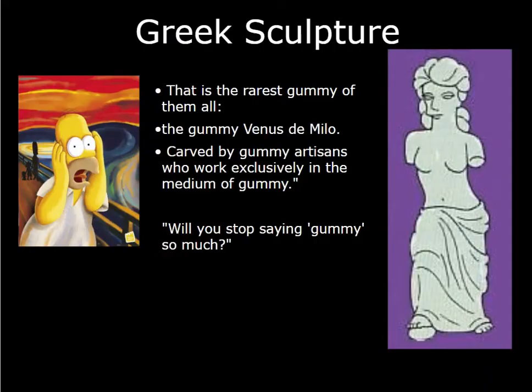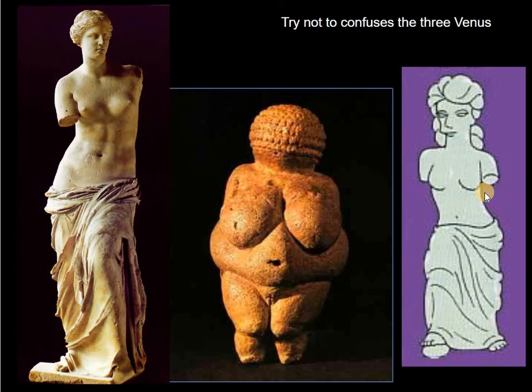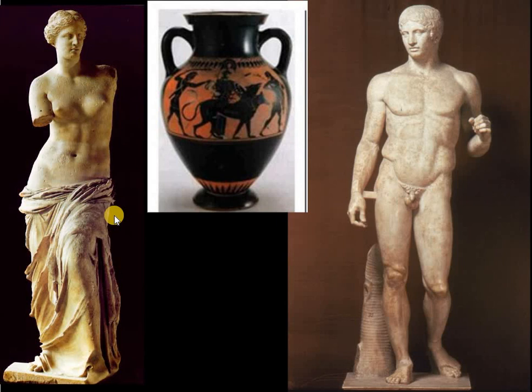One time on The Simpsons, they were making fun of it and made a gummy version of Venus de Milo, and Homer wanted to eat it. So there are actually three Venuses: Venus de Milo, made of marble; Venus of Willendorf, made of limestone; and the gummy Venus from The Simpsons. And there's also the Venus of Hohle Fels, made out of mammoth tusk. That's pretty cool. So that's all the art we're going to learn about this week. We'll see you next week.